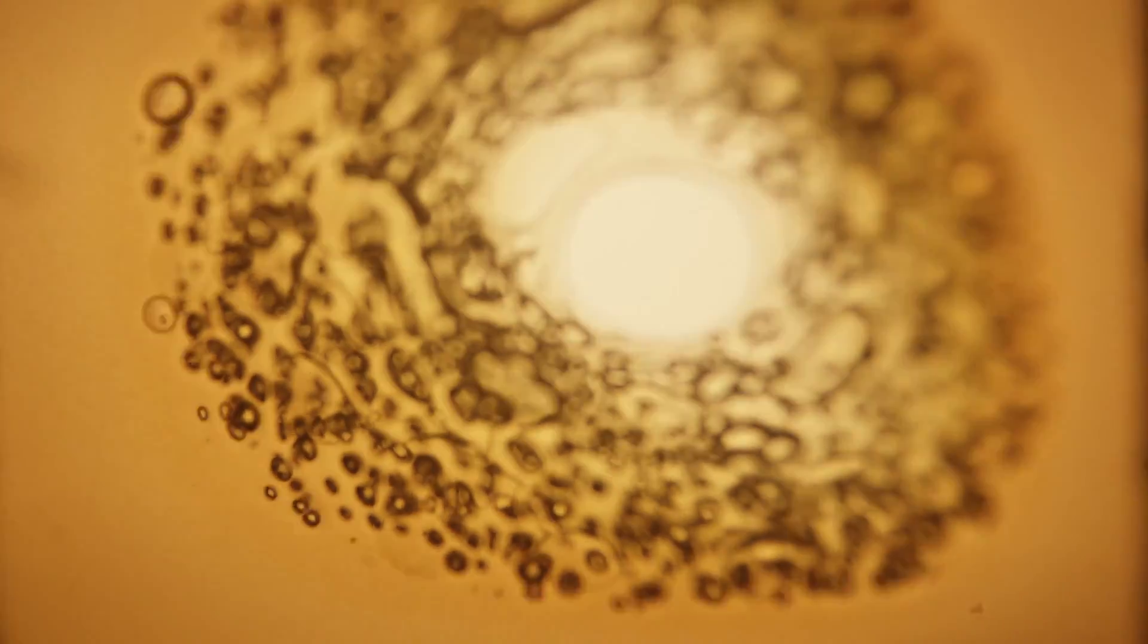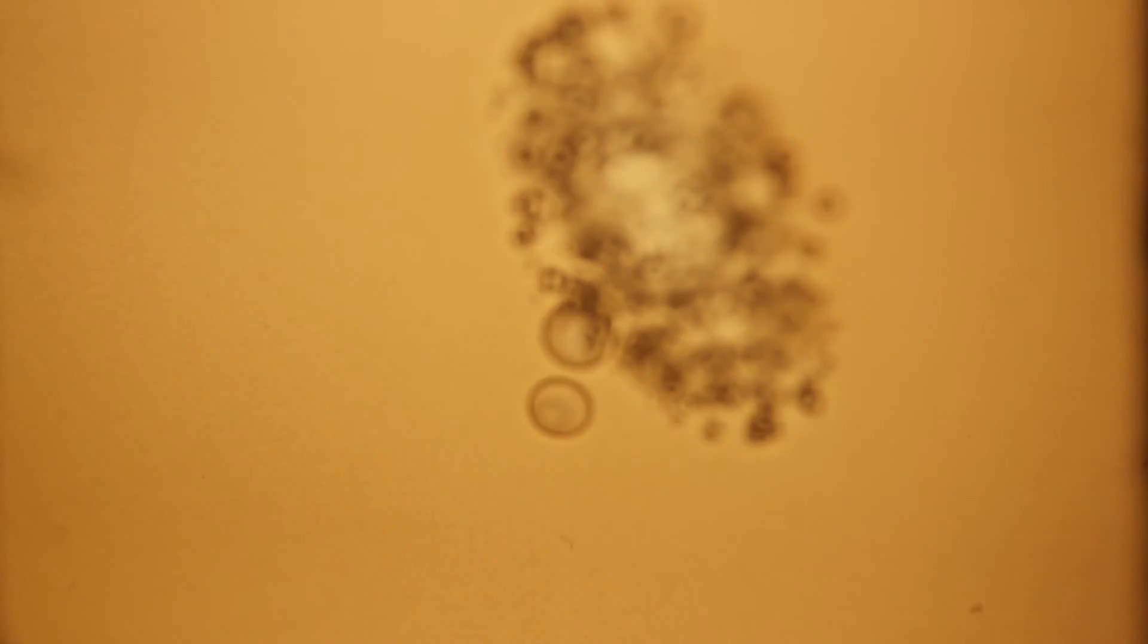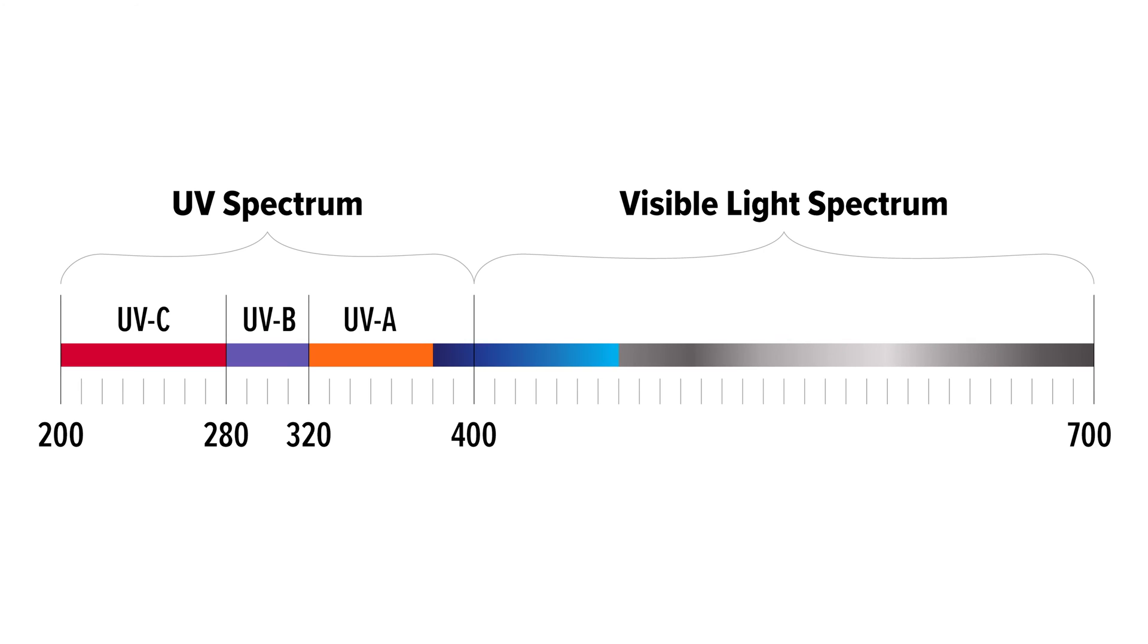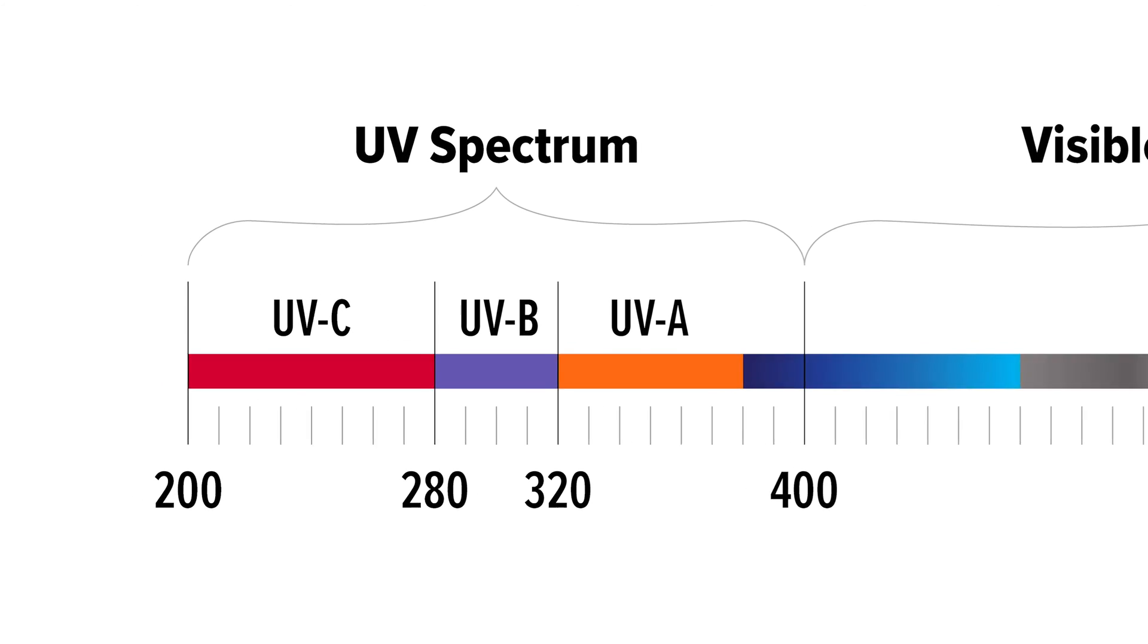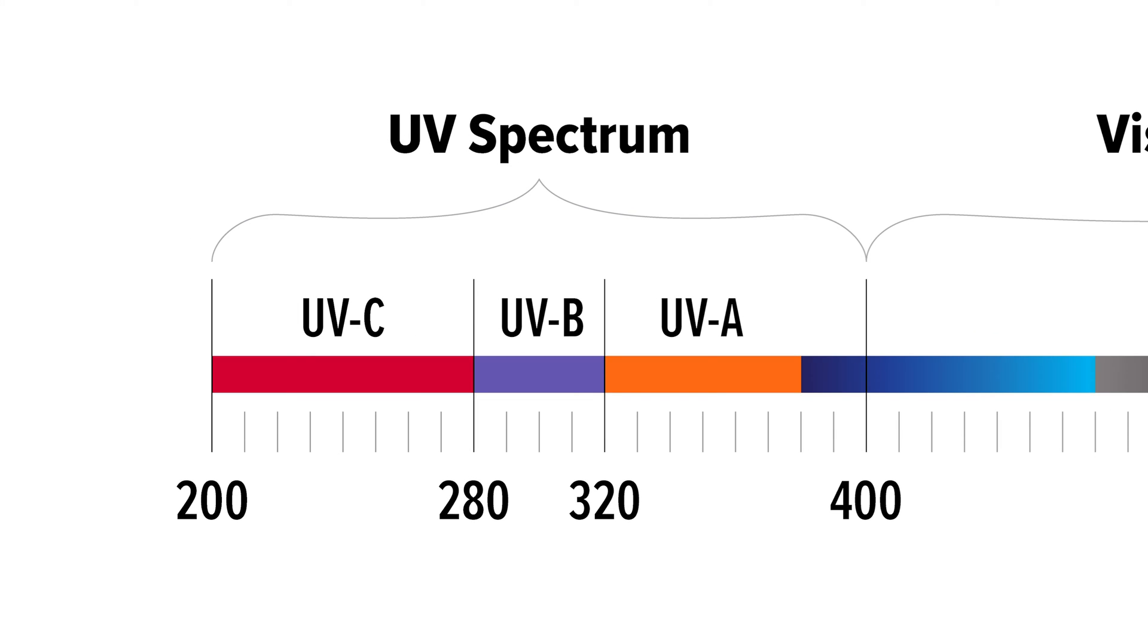Scientists have known about the disinfectant powers of UV light for more than a century. There are three different groups of wavelengths within the spectrum: UVA, UVB, and UVC.